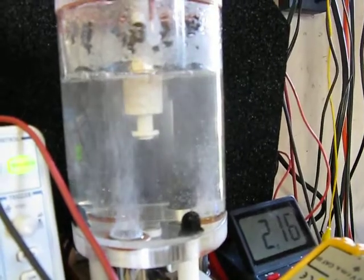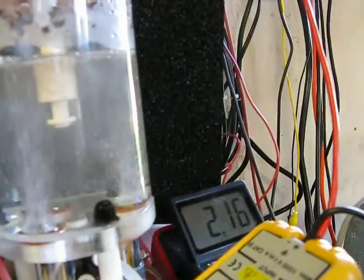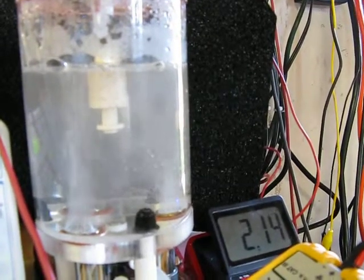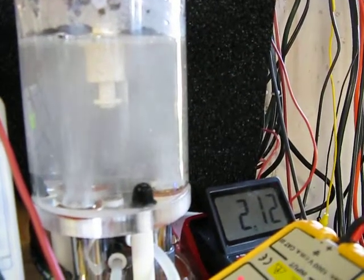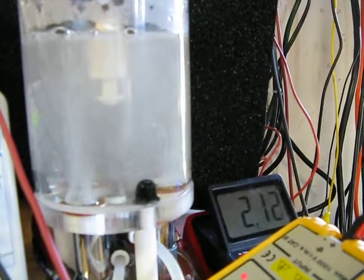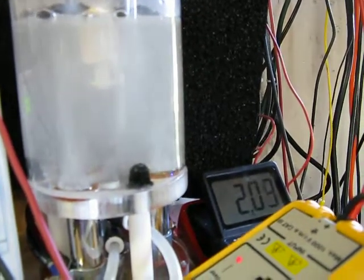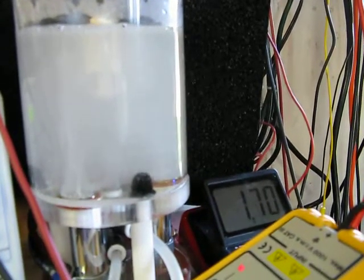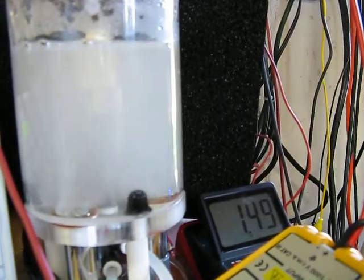Putting out fairly big bubbles. We're at right about 300 volts and kicking at 2.12 amps. I'll back it down because my transformer does not like being around 2 amps.